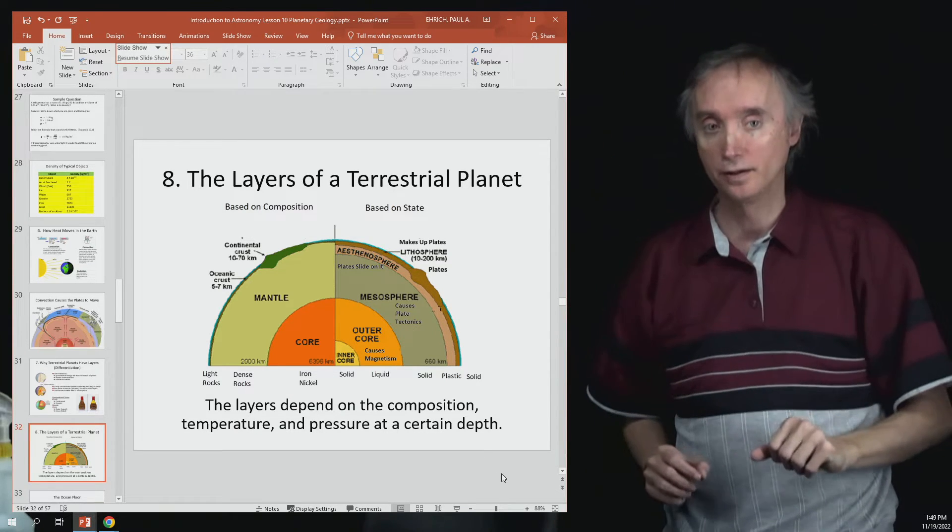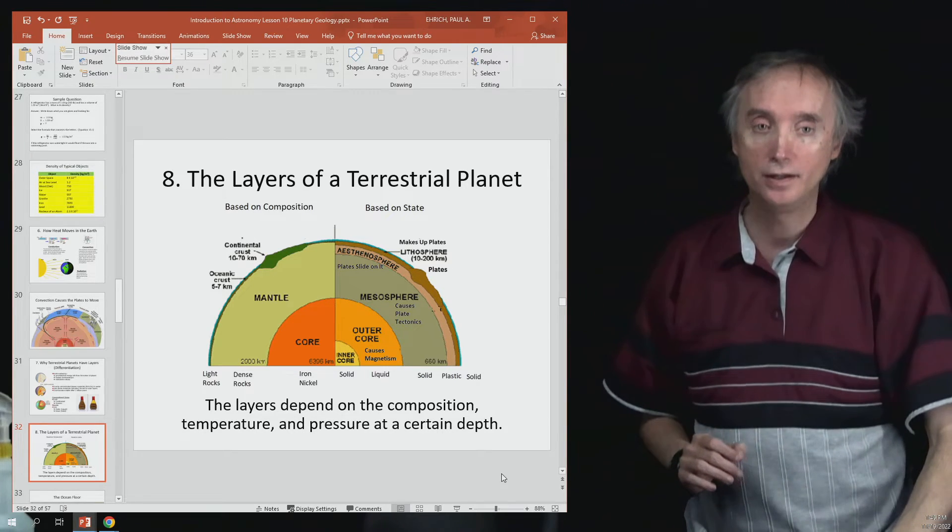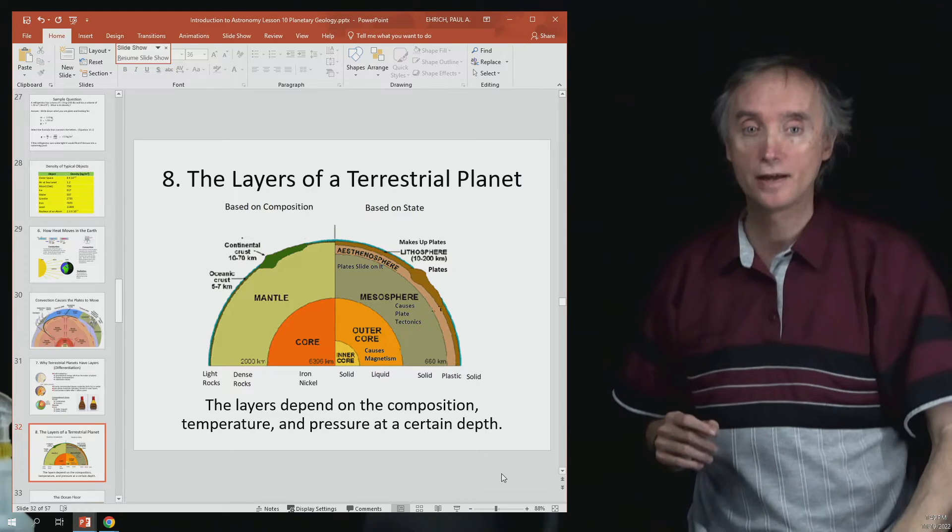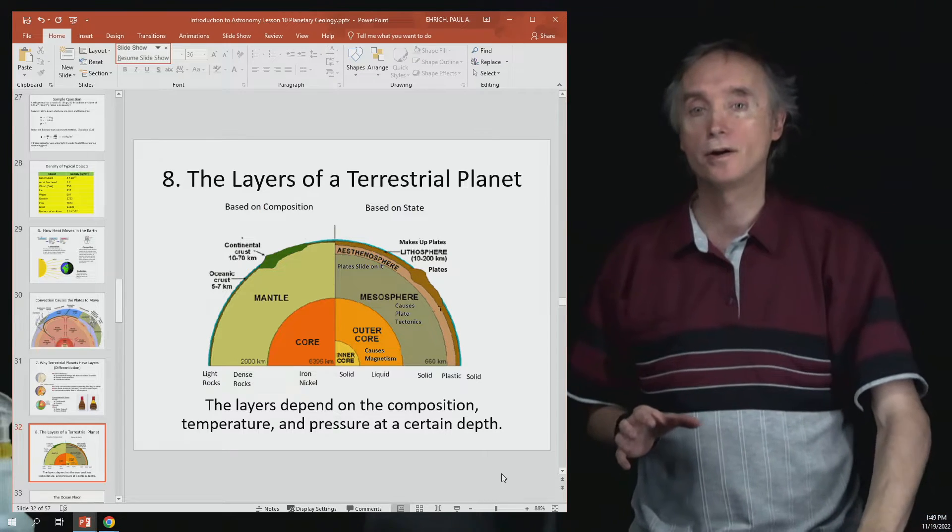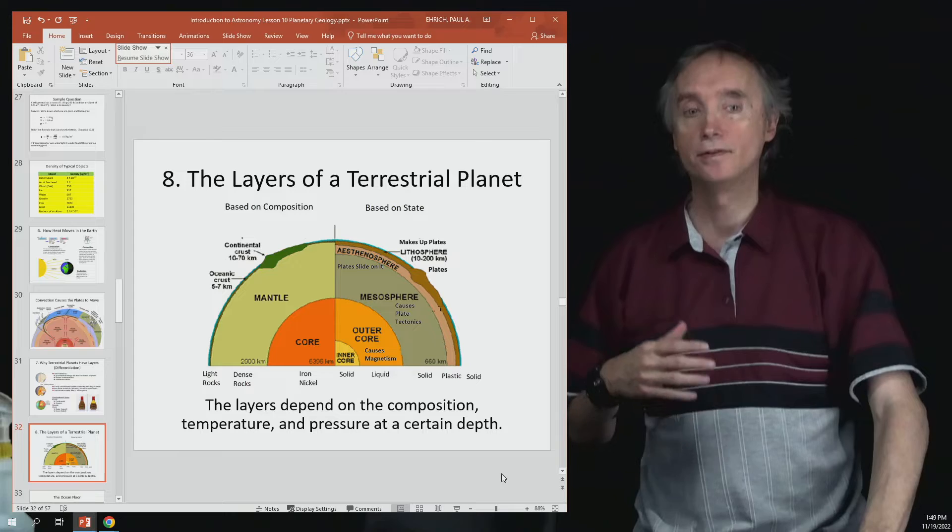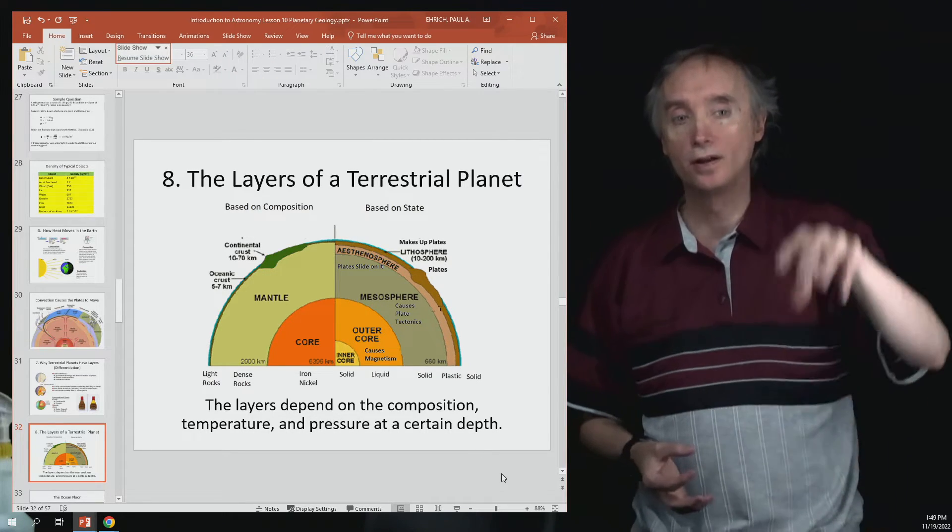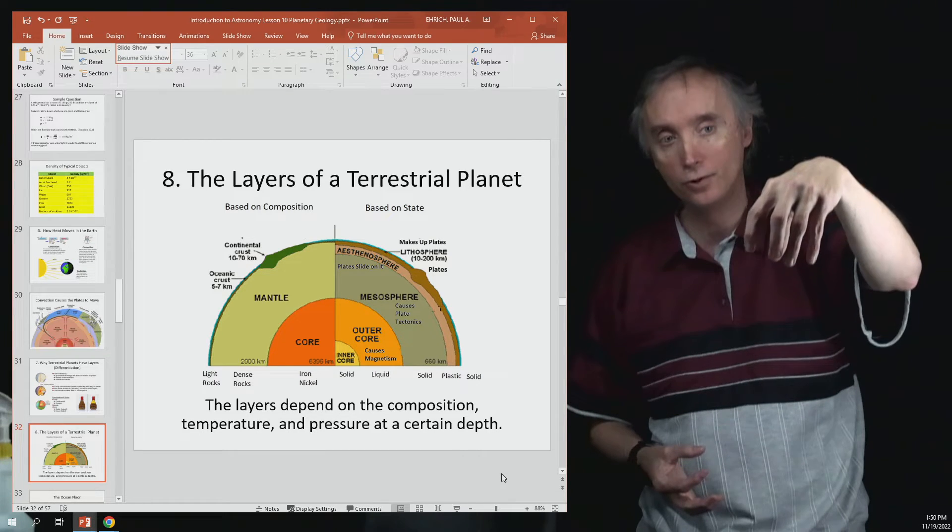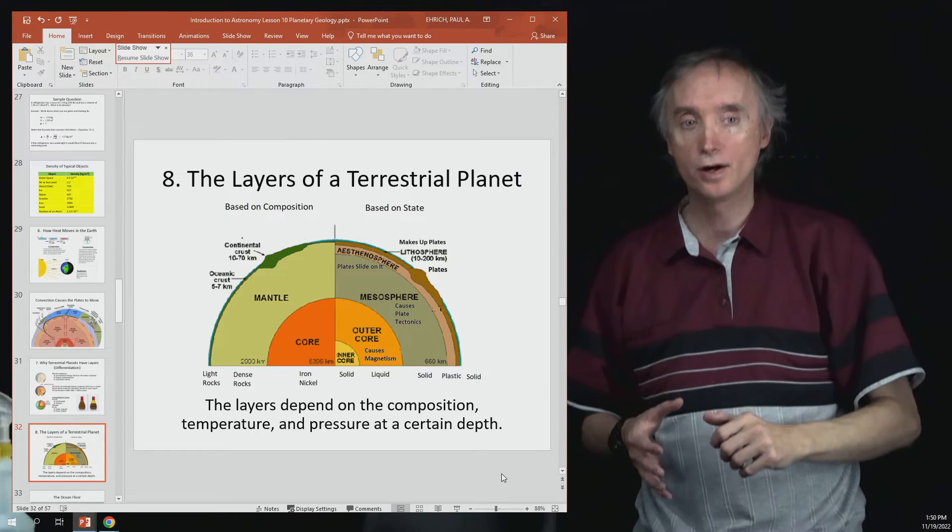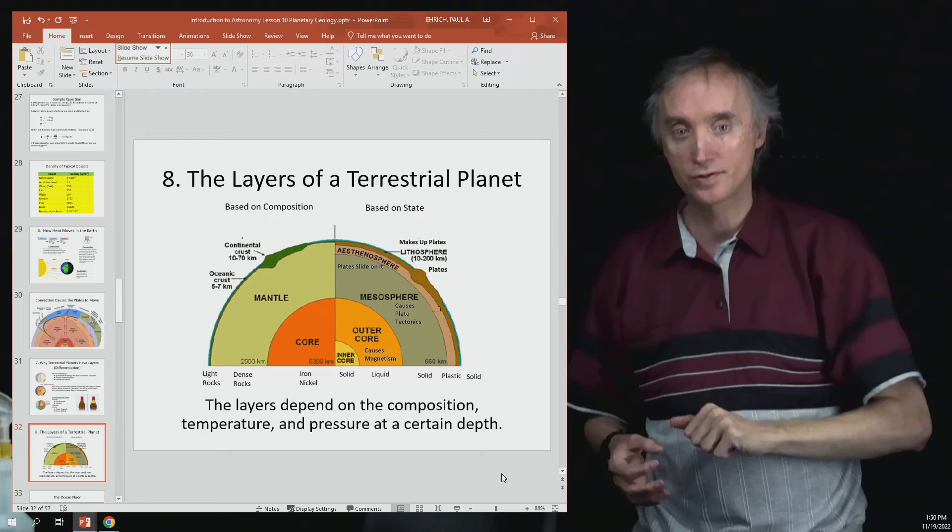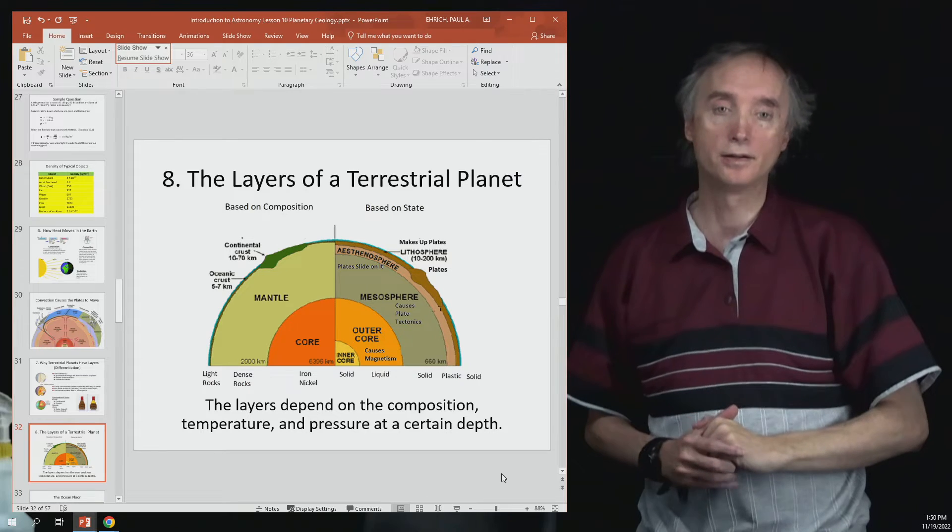One example of this is for example in Europe if you look at the stained glass windows they're a little bit thicker at the bottom than what they are at the top and that's because in the thousands of years since those cathedrals have been built the glass has been slowly flowing down because of gravity. If you were to look at it you would swear it's solid, if you were to touch it it's solid, but over millions of years or thousands of years it's actually flowing like a liquid.